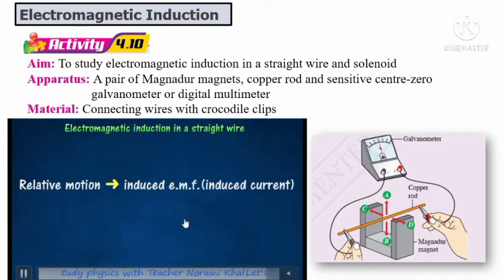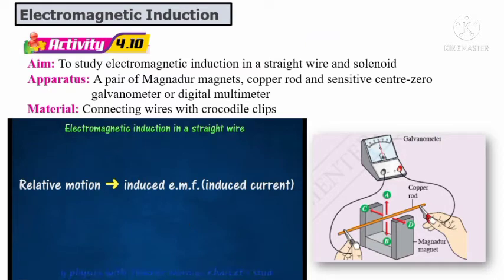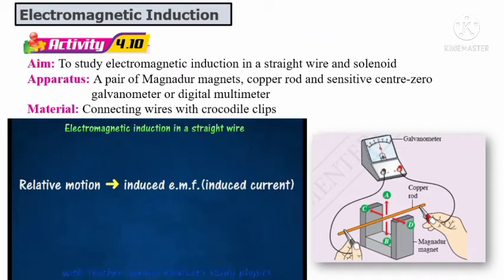So from here, what we can say is: in order to produce induced current or induced EMF, there must be relative motion between the copper rod and the magnet.